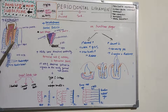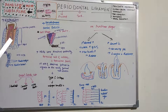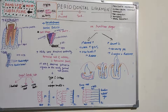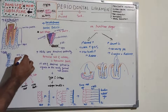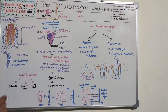At the root apex, the periodontal ligament merges with the dental pulp — shown here in pink at the root apex. Its width ranges from 0.15 to 0.38 mm.